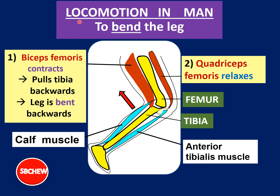Let us discuss locomotion in humans. The question is: how does a person bend his leg at the knee? There are two muscles involved — the biceps femoris and the quadriceps femoris, both located in the thigh area. The biceps femoris is a large muscle behind the femur, and the quadriceps femoris is a large muscle in the front part of the thigh.